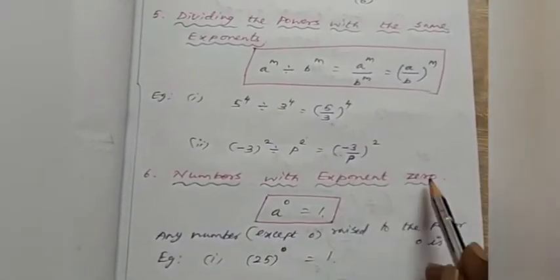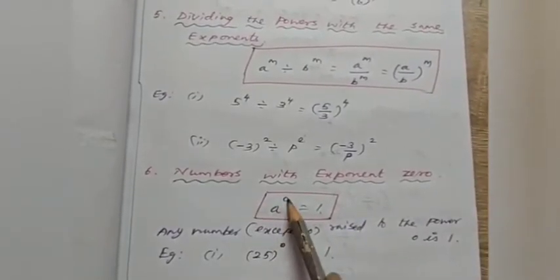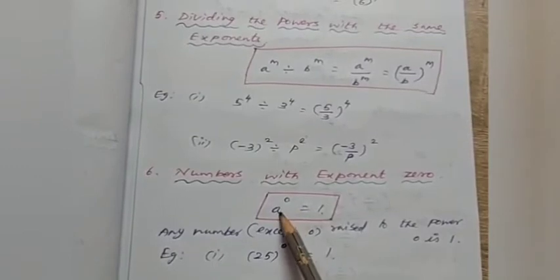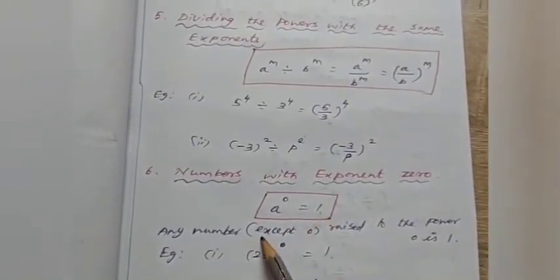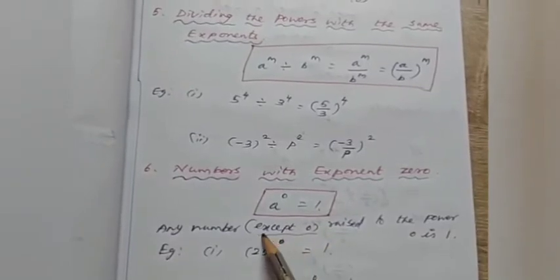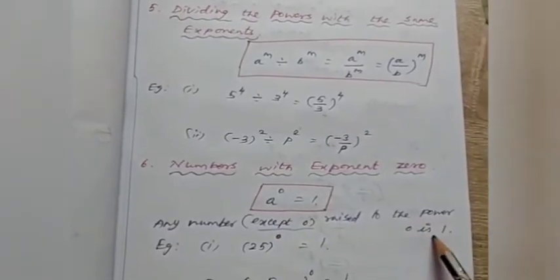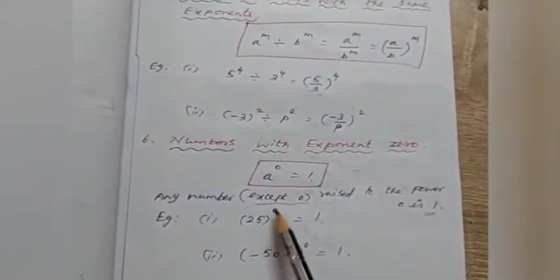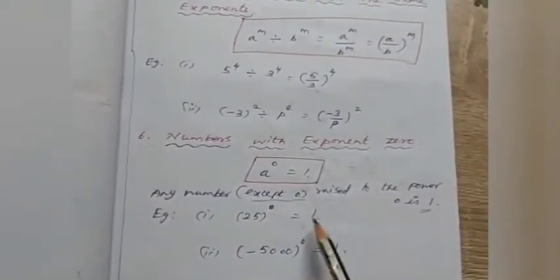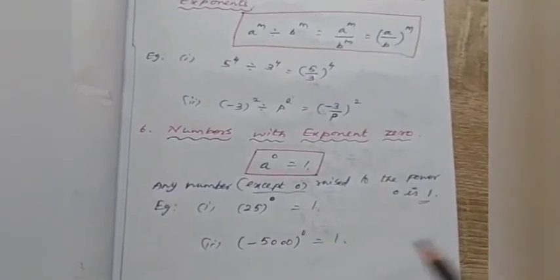The sixth law is numbers with exponent 0. Any number except 0 raised to the power 0 is equal to 1. For example, 25 whole power 0 equals 1, and minus 5000 whole power 0 equals 1.